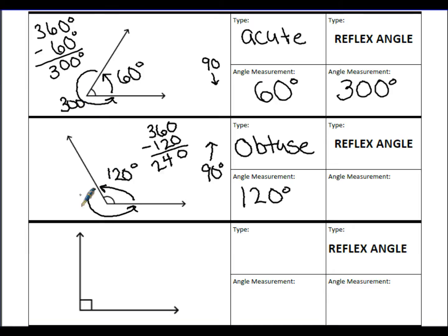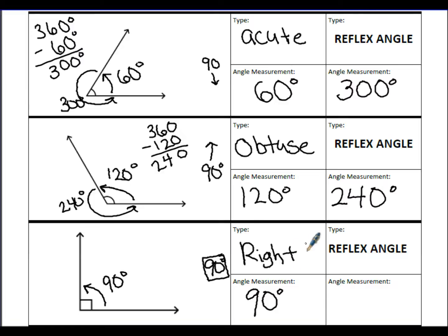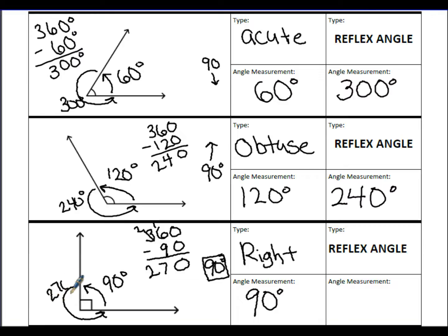The first example had a reflex angle of 300 degrees and the second had 240 degrees. A circle always adds up to 360 degrees. The next angle has a small square in the corner, which means it is a right angle — 90 degrees. The reflex angle for a right angle is 360 minus 90, which equals 270 degrees.